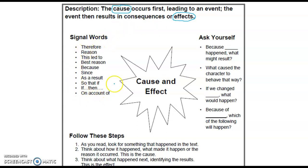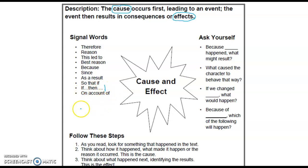We're going to look for and use signal words like: therefore, the reason, this led to, because or because of, since, as a result of, so that, if—for example, 'if it rains, then I will get very wet'—and on account of.